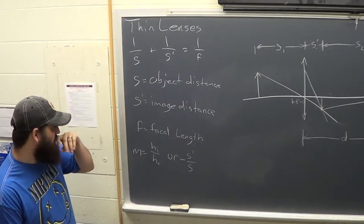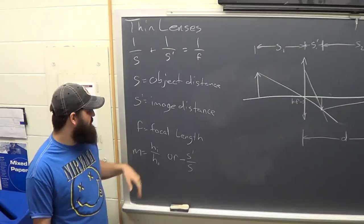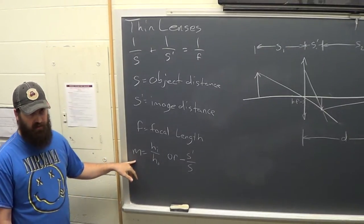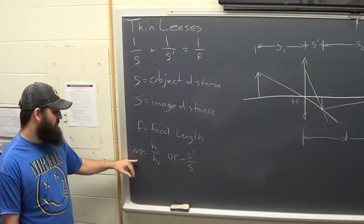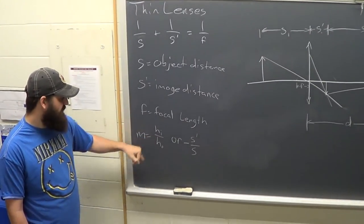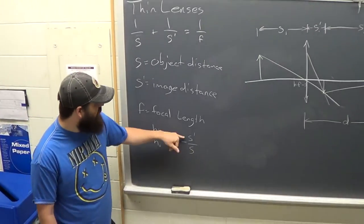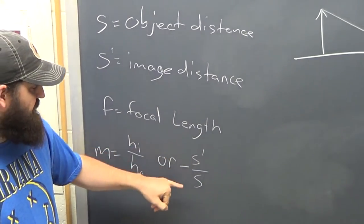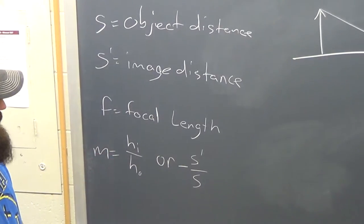S is the object distance, S prime is the image distance, F is the focal length. We'll also be calculating magnification which can be done either by dividing the height of the image by the height of the object or minus the image distance over the object distance.